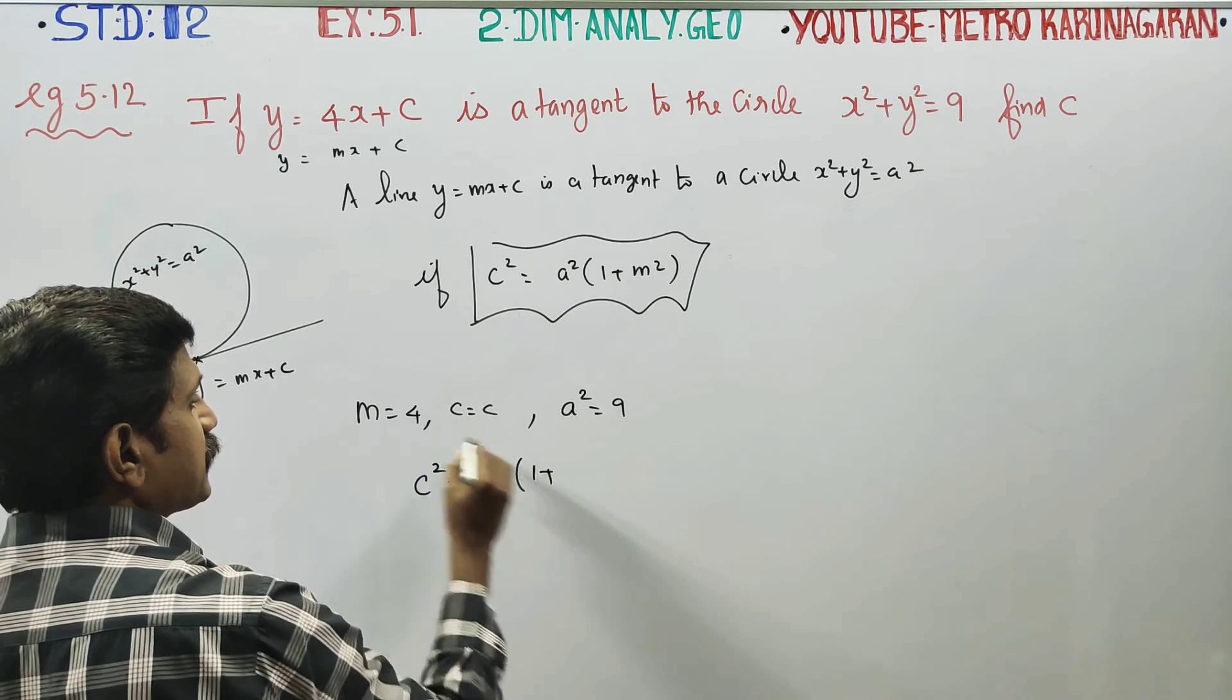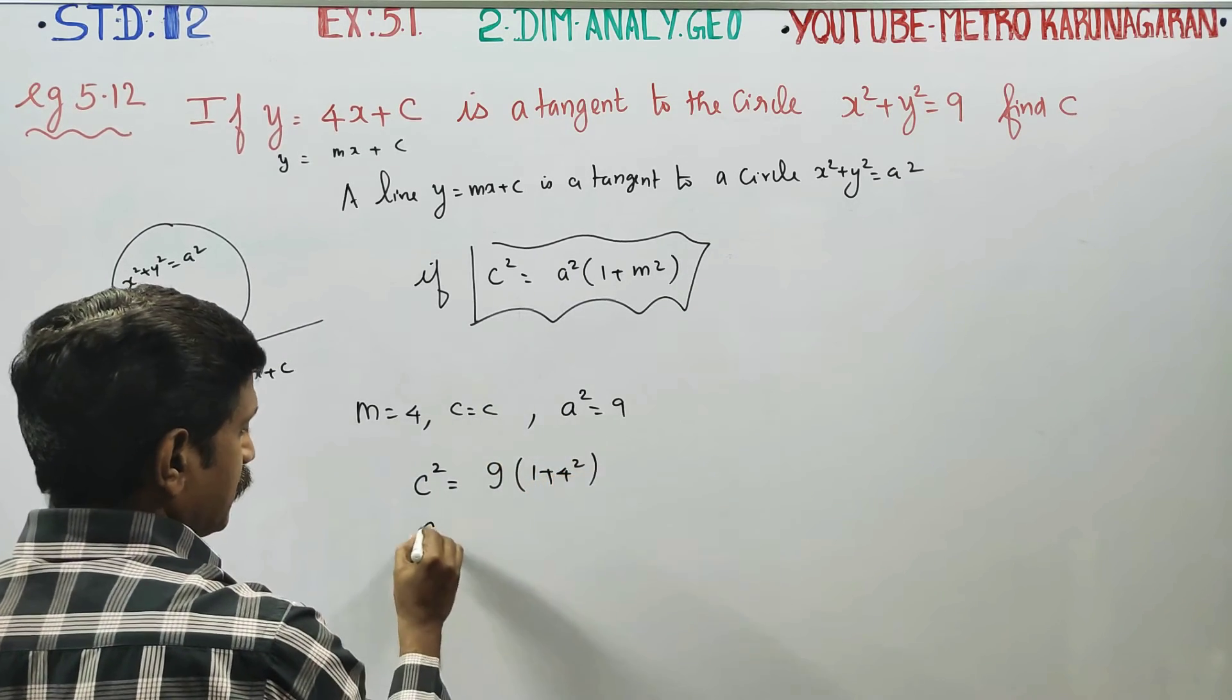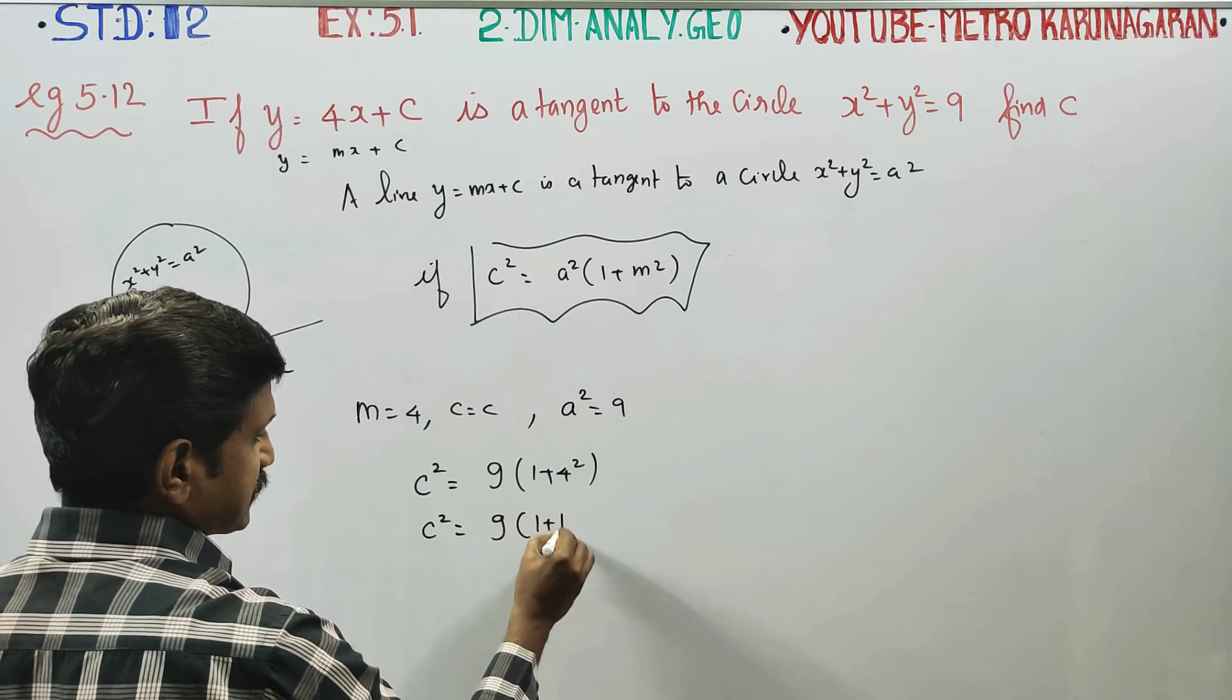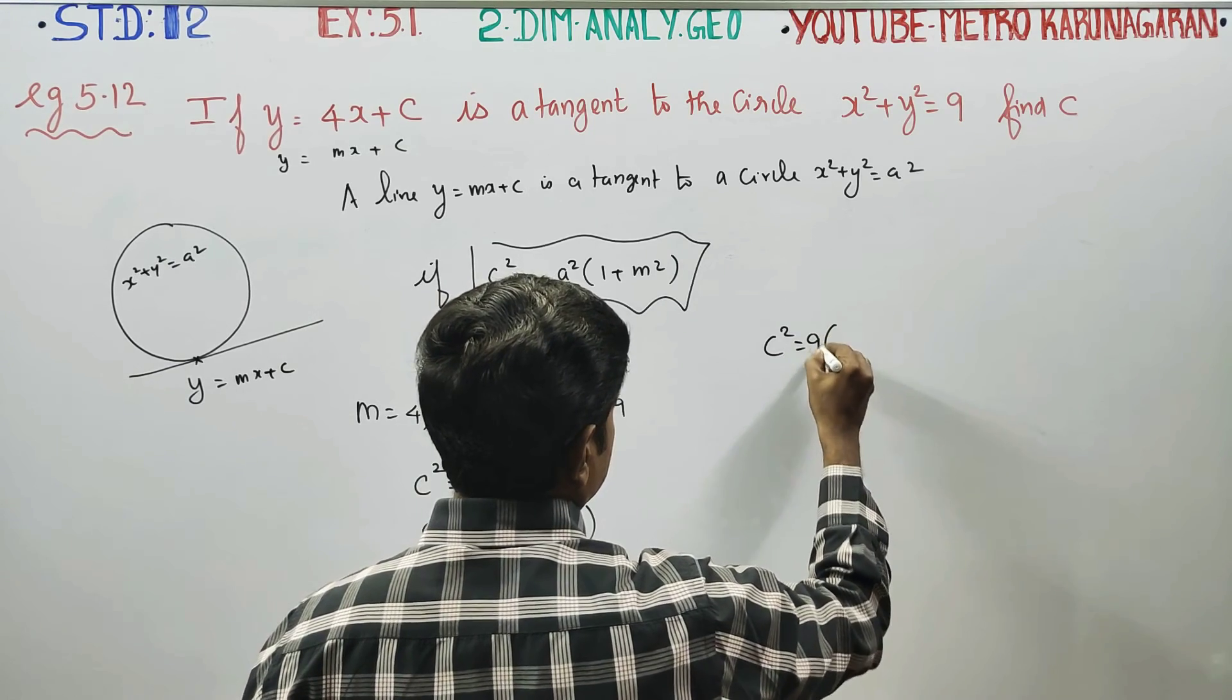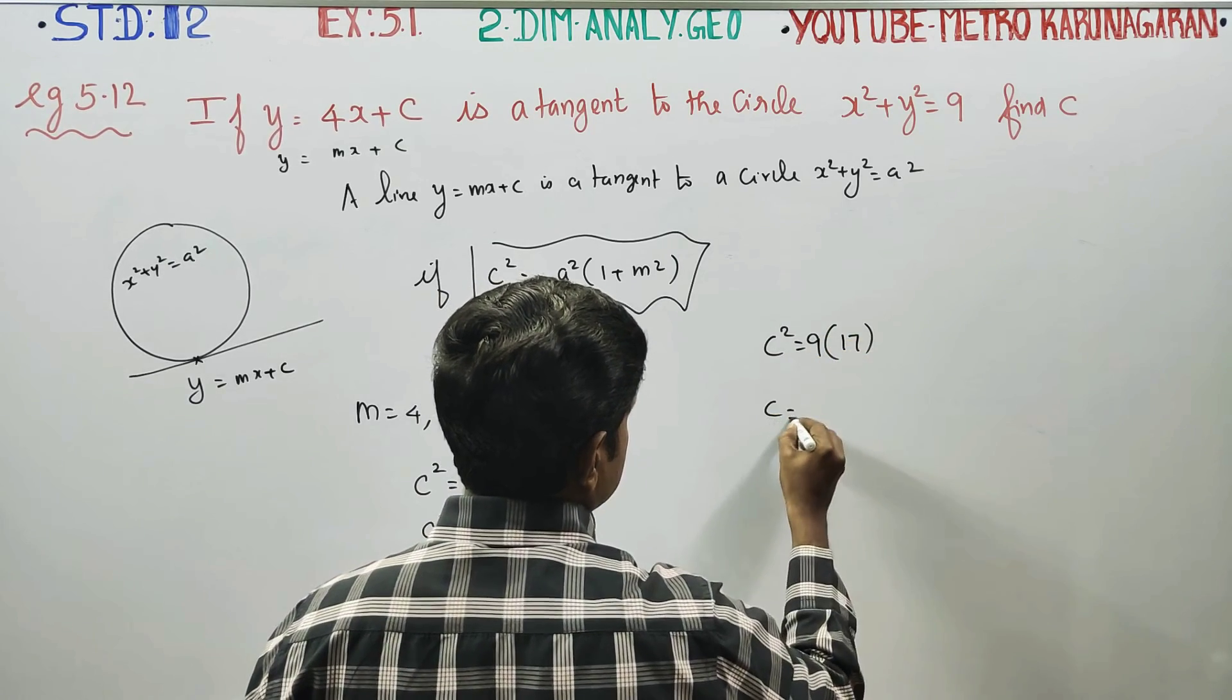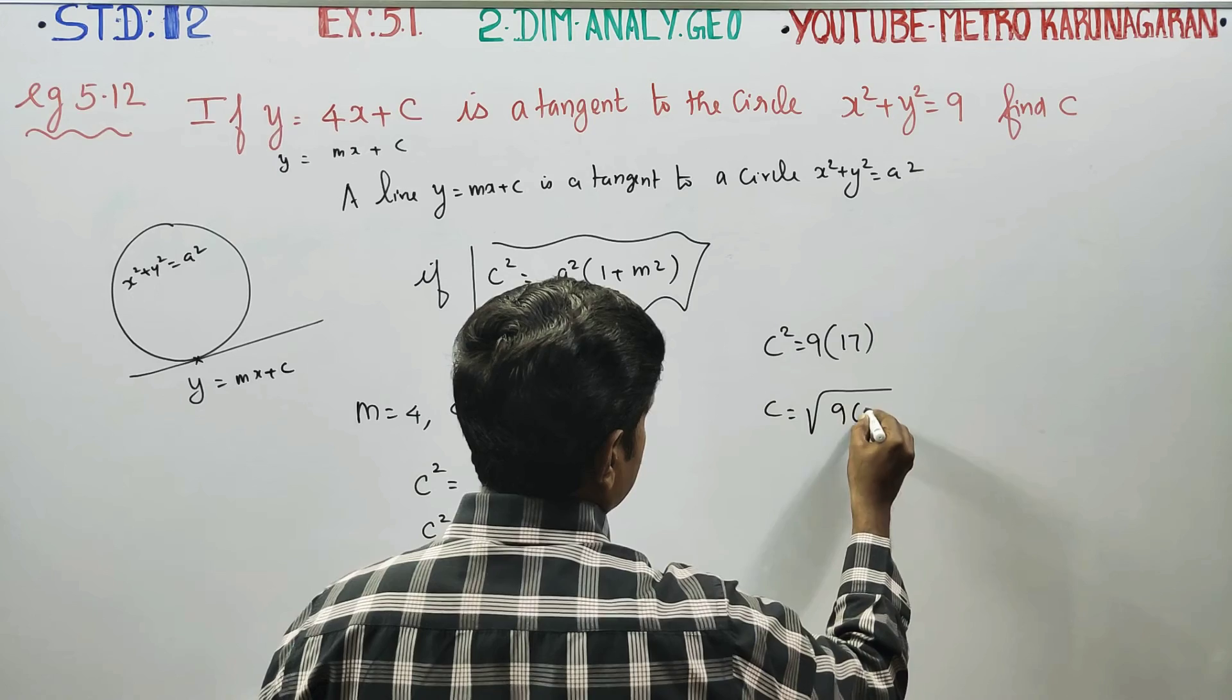1 plus m square, m square is 4 square. C square is equal to 9 times 1 plus 16. So c square is equal to 9 into 17. c is equal to square root of 9 into 17.